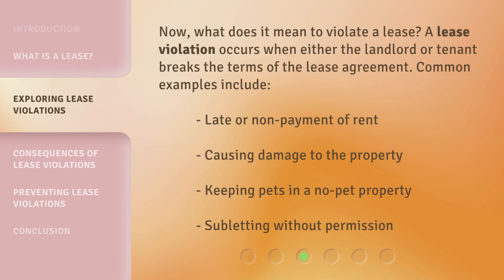Now, what does it mean to violate a lease? A lease violation occurs when either the landlord or tenant breaks the terms of the lease agreement. Common examples include late or non-payment of rent, causing damage to the property, keeping pets in a no-pet property, and subletting without permission.